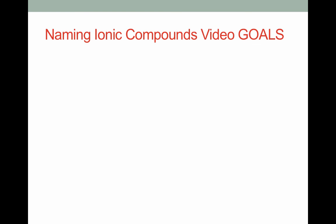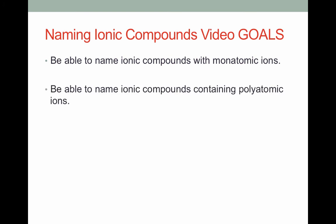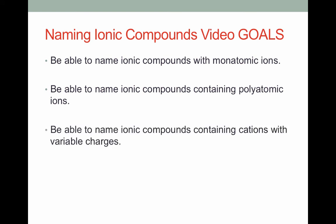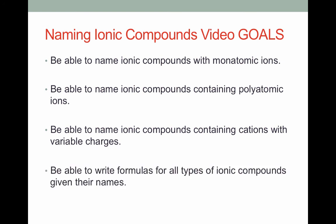That brings us to the end of this video. Let's review our goals. First, we learned how to name ionic compounds with monatomic ions by writing the name of the cation and then the name of the anion with the ending -ide. Then we learned how to name compounds containing polyatomic ions by writing the name of the anion and the cation, either of which might be a polyatomic. Then we talked about how to name ionic compounds containing cations with variable charge. Here, we indicate the charge on the cation with a Roman numeral. And then we practiced writing ionic compounds formulas from the names of ionic compounds.